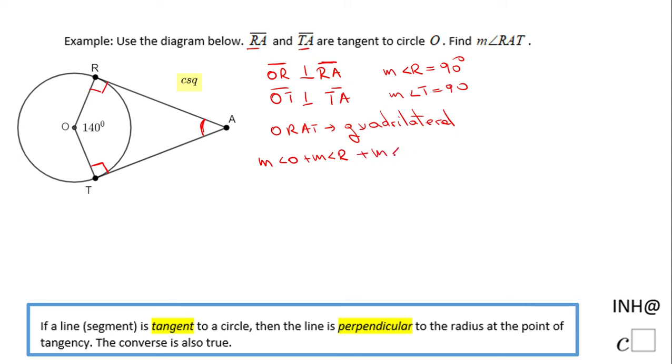The measure of angle O is 140, angle R is 90 degrees, angle A I'm gonna call X just to make the problem a little bit more algebraically, and angle T is also 90 degrees. So we have now an algebraic equation. Remember, X is nothing more than the measure of angle A or R A T.